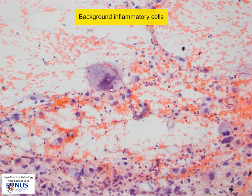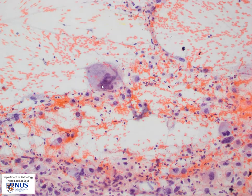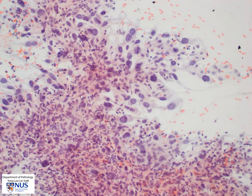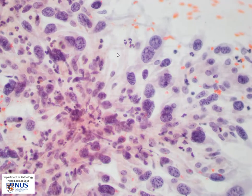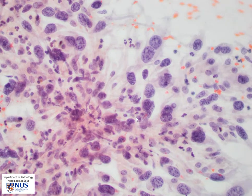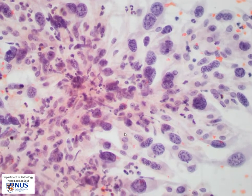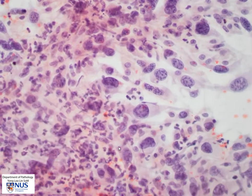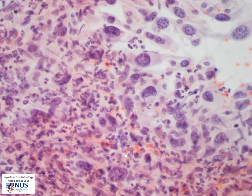Here is a higher magnification view of the large pleomorphic bizarre cell and there is a suggestion of spindling as well in some of the areas. Note the marked acute inflammatory infiltrate that accompanies the malignant cells.